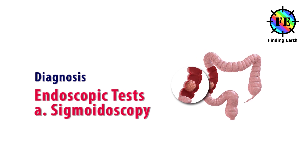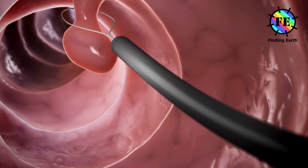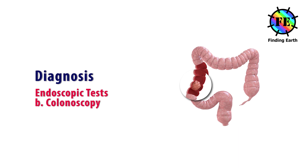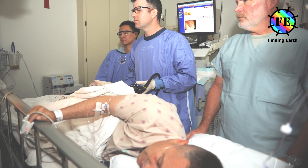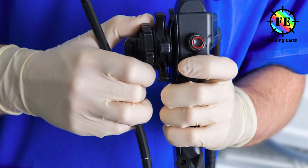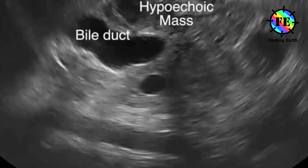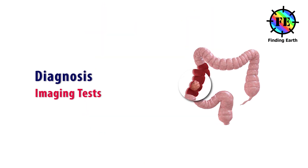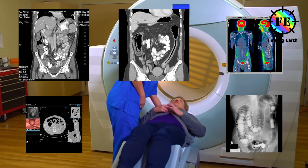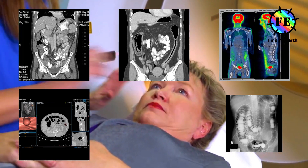Endoscopic tests, which may include: Sigmoidoscopy — a tiny camera on flexible plastic tubing called a sigmoidoscope is inserted into the rectum, giving the doctor a view of the rectum and lower colon; tissue or polyps can be removed and looked at under a microscope. Colonoscopy — a longer version of a sigmoidoscope, a colonoscope can look at the entire colon. Endoscopic ultrasound (EUS) — an endoscope is inserted into the rectum, and a probe bounces high-energy sound waves off internal organs to make a picture, also called endosonography. Imaging tests may include CT or CAT scan, MRI scan, and PET or CT positron emission tomography scan, virtual colonoscopy or CT colonoscopy.